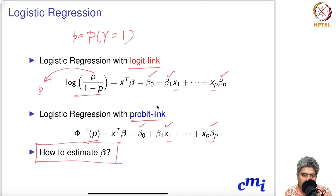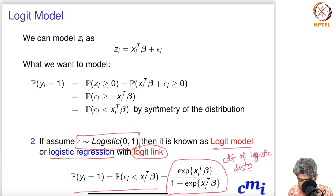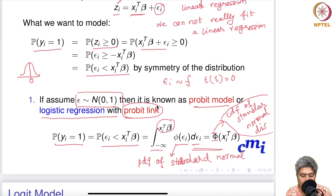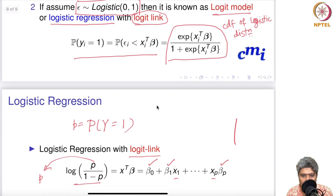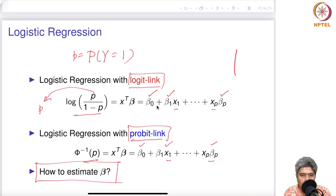Before ending, you may ask about using other distributions. Of course you can assume other distributions for εi — like the Cauchy distribution giving a Cauchy link, or the extreme value distribution giving an extreme value link. However, the logit link and probit link are the most popular and are the two link functions you will typically see in any standard textbook.